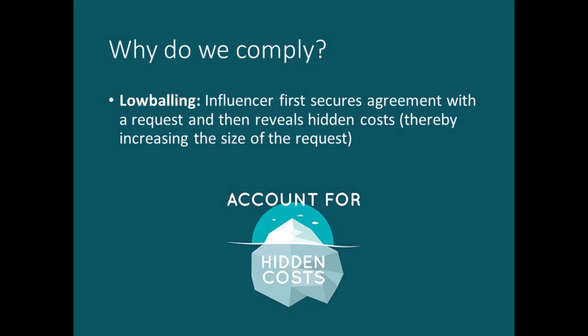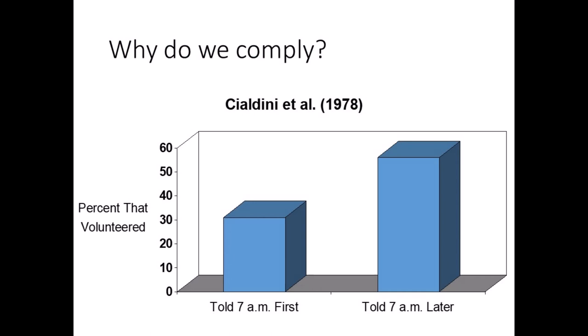Lowballing is another two-step technique. First, the influencer presents their request, and once the target complies, the influencer reveals additional hidden costs, which increases the size of the request. In a study by Cialdini and colleagues, students were asked to participate in a research study for extra credit. Half were told up front they needed to arrive at 7 a.m. — only 31% showed up. The other half were lowballed and not told the arrival time until after they agreed — 56% showed up. This works because we become more committed during the negotiation phase and feel obligated to fulfill our commitment to the first request.